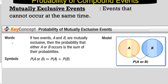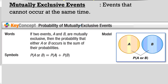A little more vocabulary: mutually exclusive events are events that cannot occur at the same time. If two events are mutually exclusive, then the probability that either one occurs is the sum of their probabilities. A Venn diagram shows no overlap — if you're in B you cannot be in A, and vice versa. So the probability of A or B is just P(A) plus P(B).